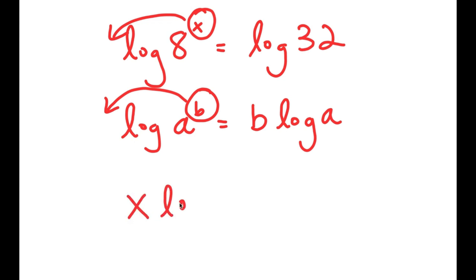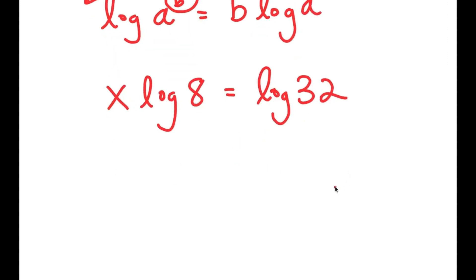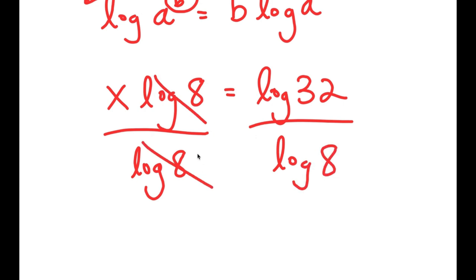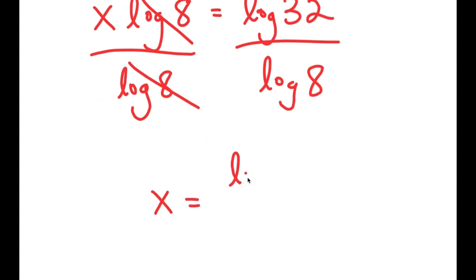So I get x times log of 8 is equal to log of 32. From here, I'm going to divide both sides by log 8 because we want to isolate x, since that's what we're trying to find the value of. These two cancel out and I get x is equal to log of 32 over log of 8.